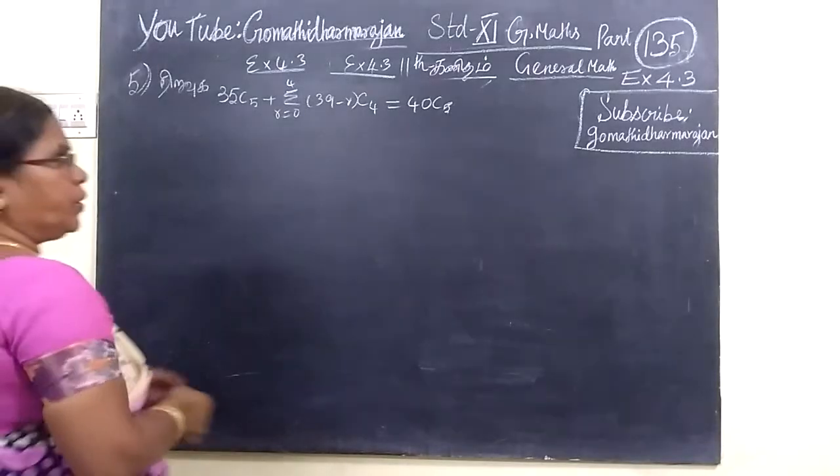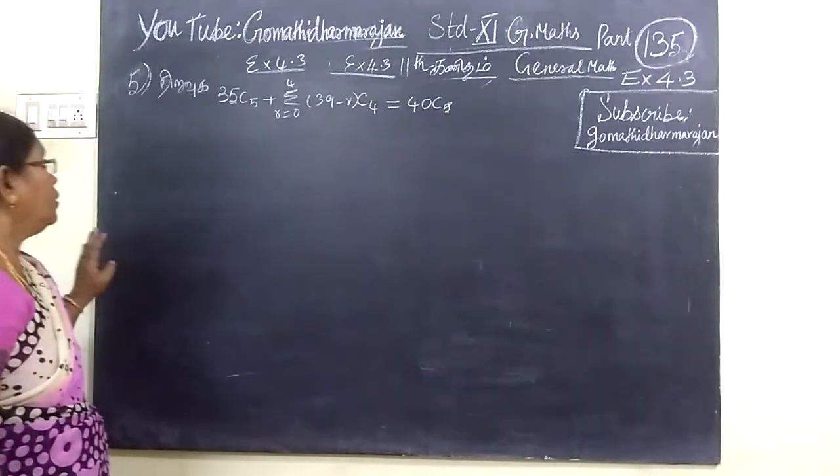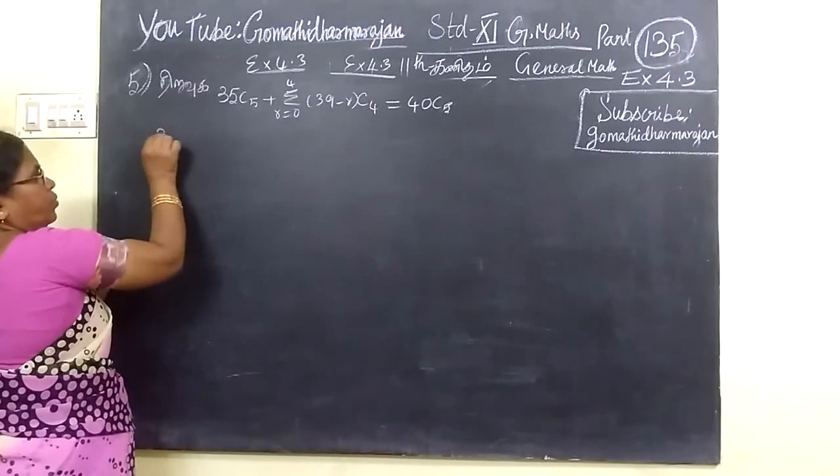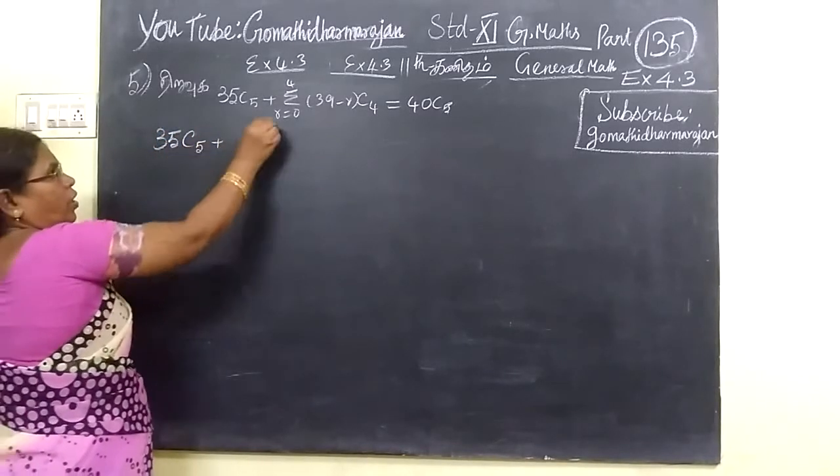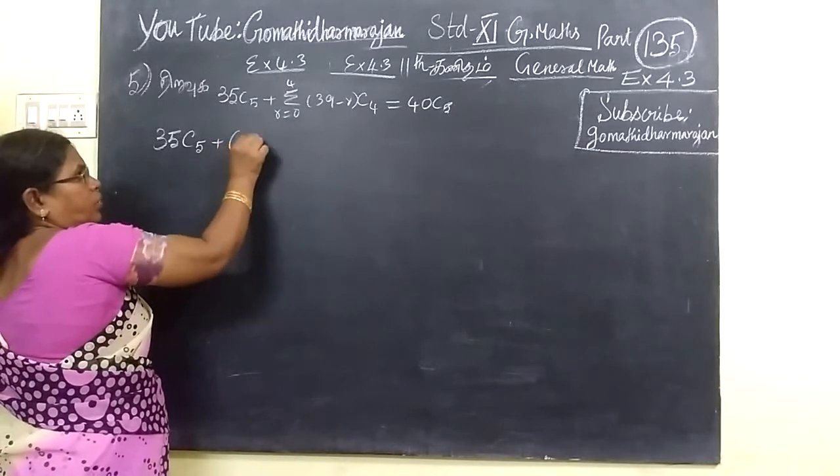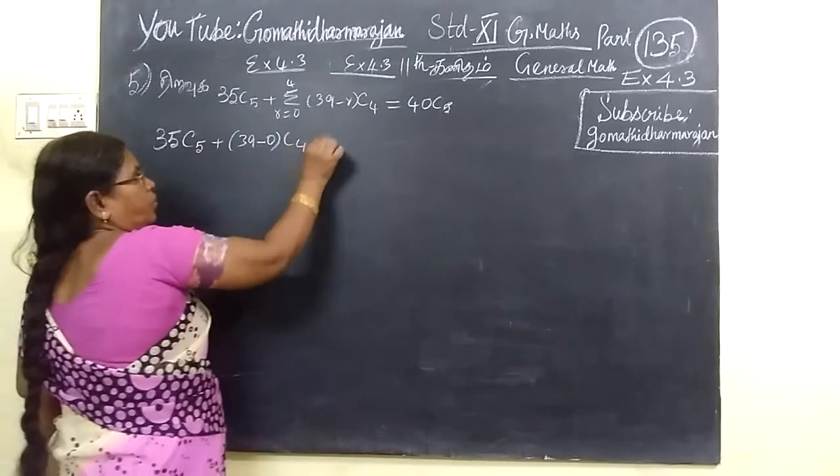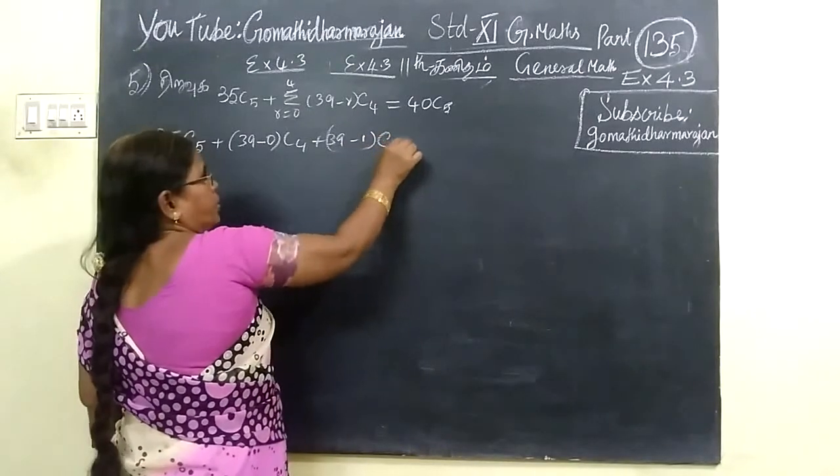So, next question is 135, and it is 4.3, 15. This is the same type for random video.